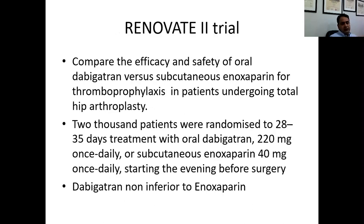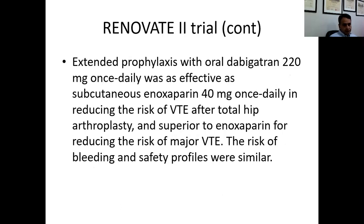The RE-NOVATE 2 trial compared the efficacy and safety of oral dabigatran versus subcutaneous Clexane (enoxaparin) for thromboprophylaxis in patients undergoing total hip arthroplasty. There were 2,000 patients randomized to 28 to 35 days of oral dabigatran 220 mg once daily versus subcutaneous enoxaparin 40 mg once daily, starting the evening before surgery. The study revealed that dabigatran was non-inferior to enoxaparin, and can therefore be used in patients undergoing hip arthroplasty at a dose of 220 mg once daily.